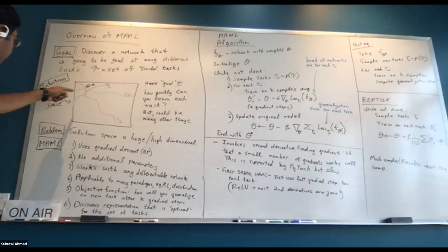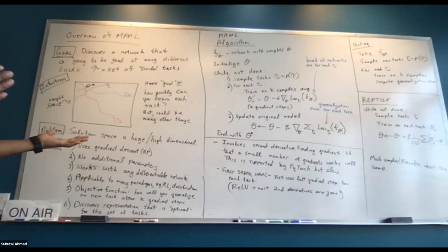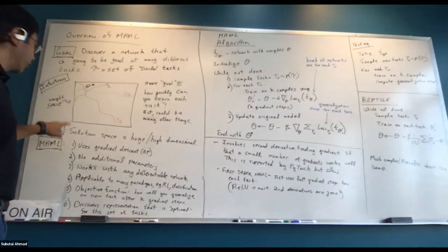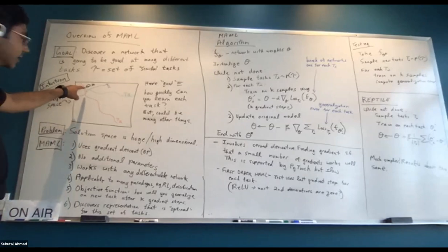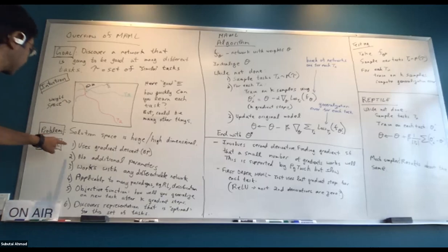The problem is this is a very high-dimensional search space, and most optimization techniques are not good at searching high-dimensional spaces. What MAML does is formulate the problem so you can use gradient descent to find this point — and we know backprop and gradient descent are pretty good at solving high-dimensional problems.